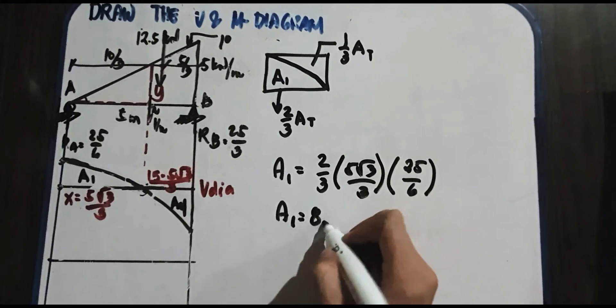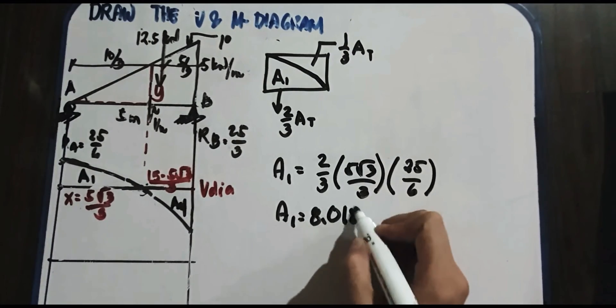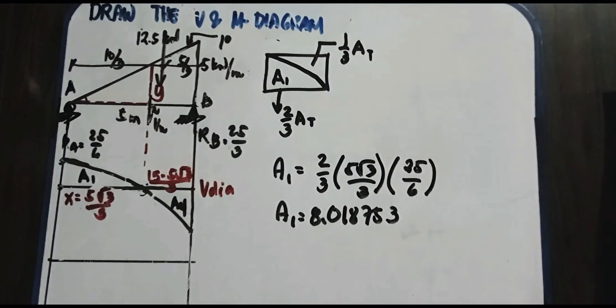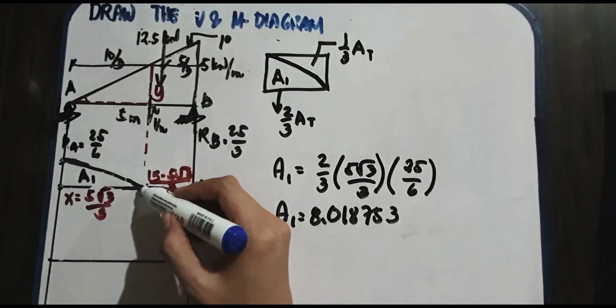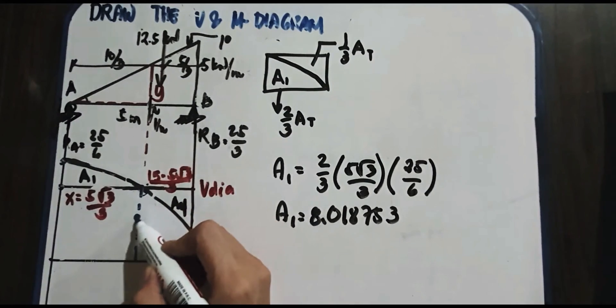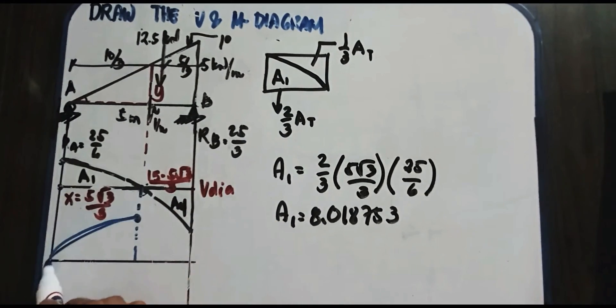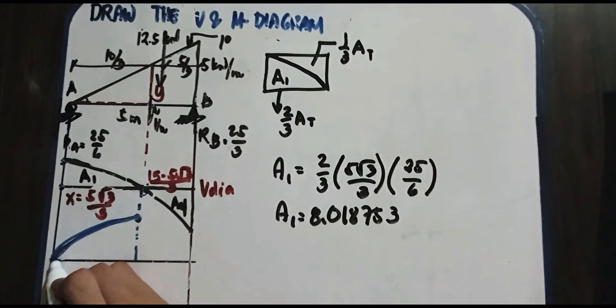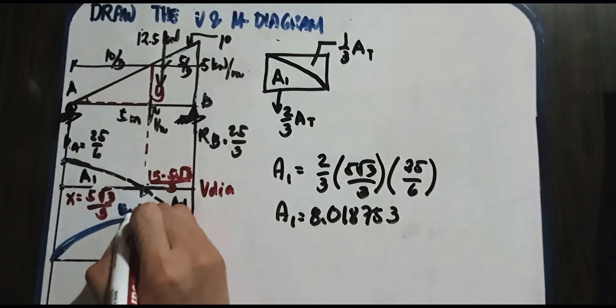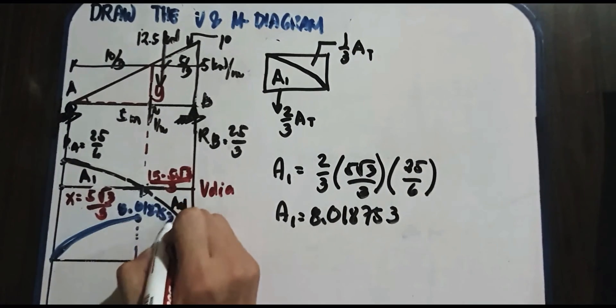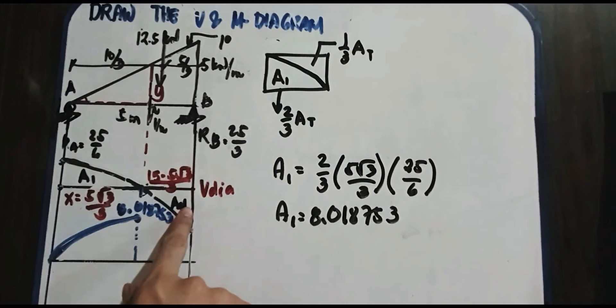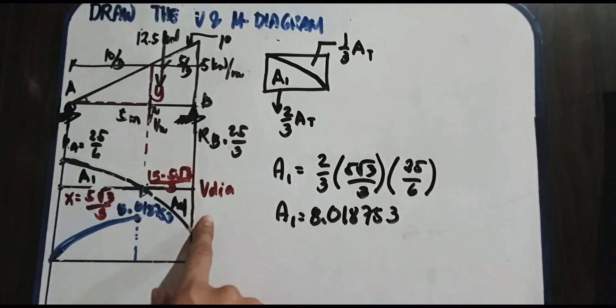Area 1 is equal to 8.18753. So that is, lagay lang natin dito. Drop natin ito. And then, lagay natin yan. This is your 3rd degree. Lagay lang natin yung value. So we have 8.18753. Next, paano naman natin i-compute yung A4? Bakit A4 yan? Mas maintindihan natin yan kapag isosolve natin dyan ng mas maayos. So ito kasi, kapag ginawa nyo 1 third of this area, mali na po yung sagot nyo sa moment. Hindi na sya sa magsizero. So ano yung pwede natin gawin? Ito po.